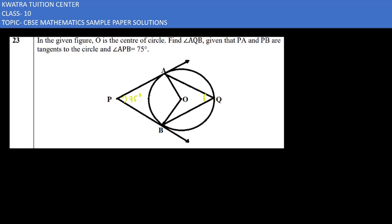You have this radius AO, and PA is a tangent. Then what is it? It's 90 degrees. Angle PAO is 90 degrees.